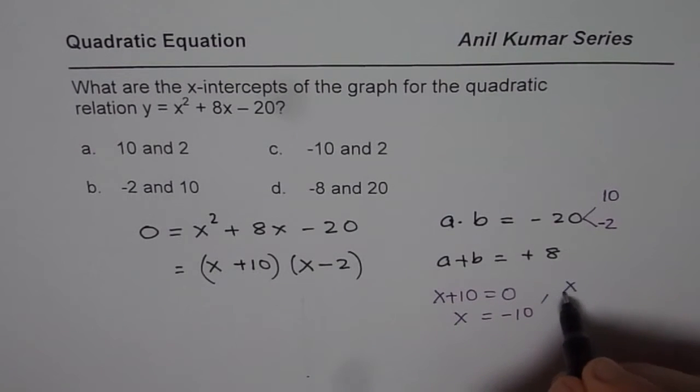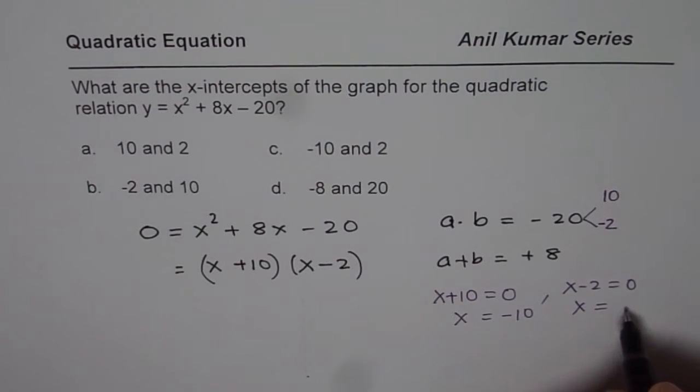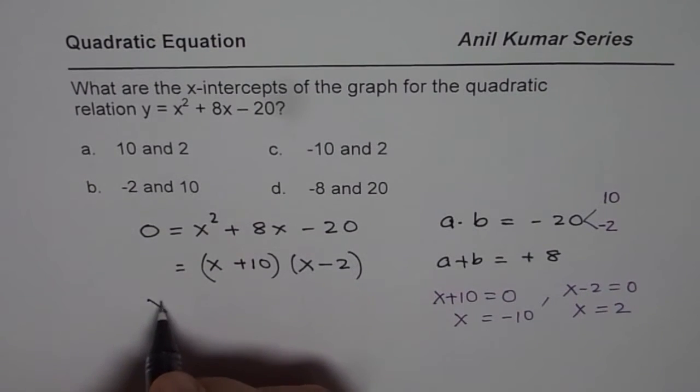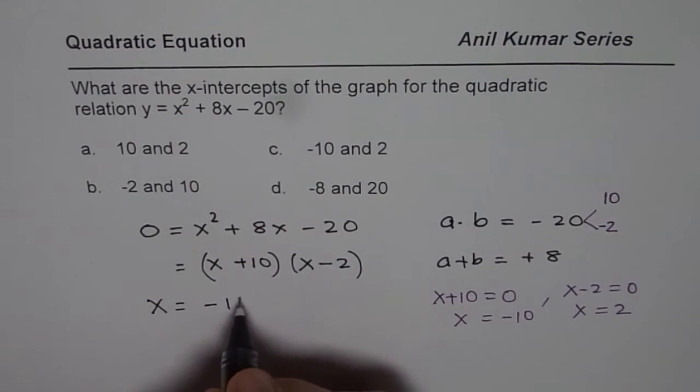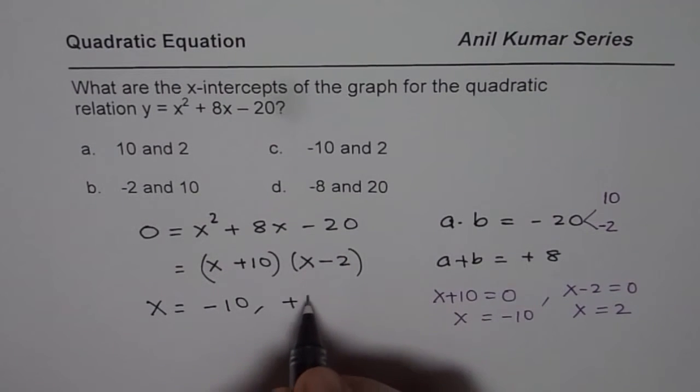And you have to write x - 2 = 0. That gives you x = +2. And therefore, our solution here is x = -10 or +2, right?